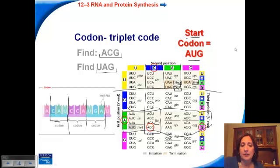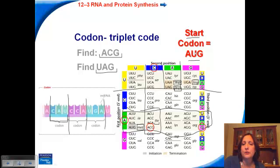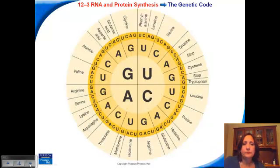The start codon codes for methionine. Here is the start codon, and it codes for MET. You do have to memorize AUG as the start codon, and that's it — because it doesn't say 'start' on your codon chart, it will just say MET.